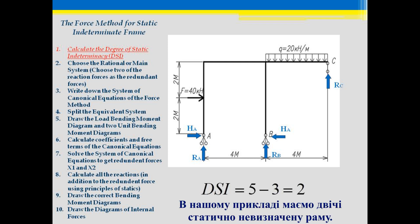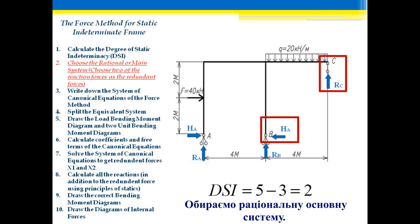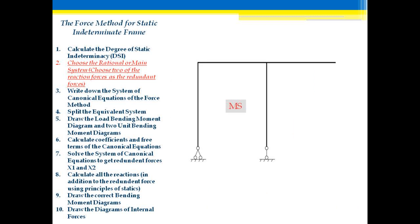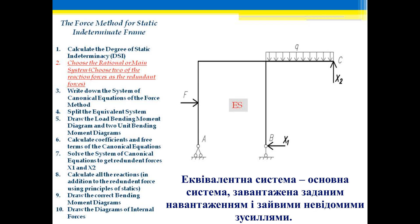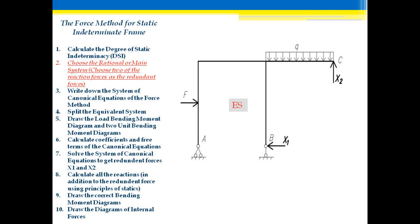In our problem we have two redundant unknowns, so our frame is twice statically indeterminate. The next step is to choose the rational or main system — that is, choose two of the reaction forces as the redundant forces. The main system is the statically determinate system, and the equivalent system is the statically determinate system acted upon by the applied loads and the redundant forces.